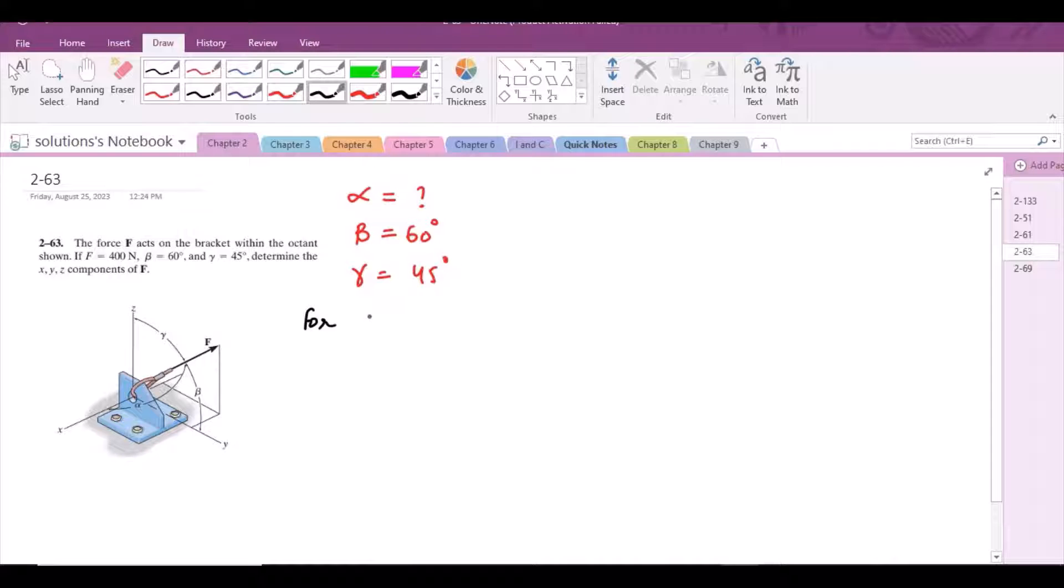For alpha, we have this property: cos²α + cos²β + cos²γ = 1. From here, cos²α = 1 - cos²(60°) - cos²(45°).